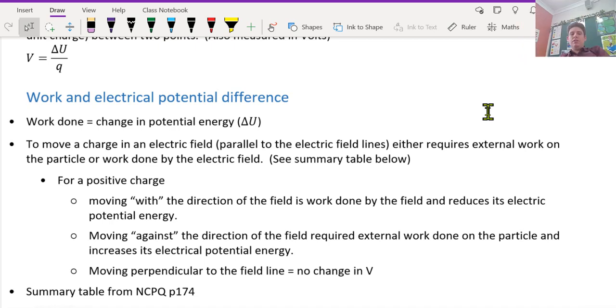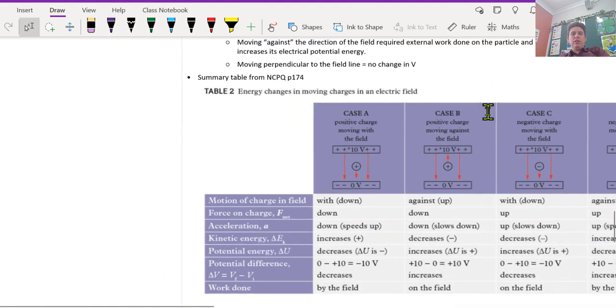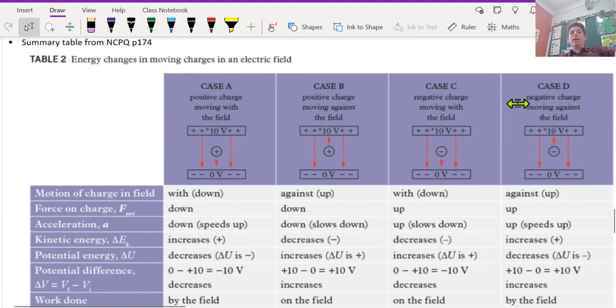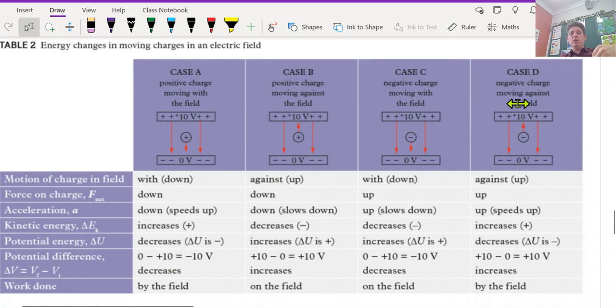And this is a great summary - the four cases. So the first two cases, it's a positive charge. The first case, the charge is going away from the positive terminal towards the negative terminal, and it's work done by the field. The second one is also a positive charge, but it's going towards the positive terminal. So positive charge towards a positive terminal increases the potential difference, and it's acting on the field.